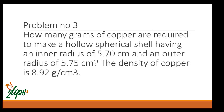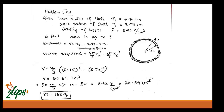Problem number three: how many grams of copper are required to make a hollow spherical shell having an inner radius of 5.70 centimeters and outer radius of 5.75 centimeters? The density of copper is 8.92 grams per centimeter cubed. A hollow shell is like a football — there is no mass inside, only on the surface, which has a certain thickness.